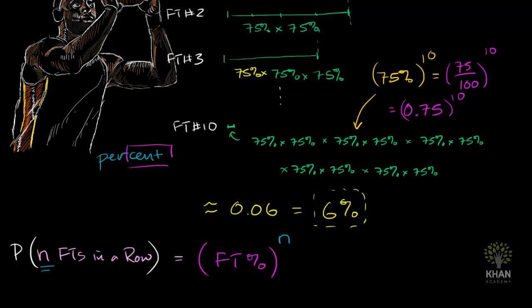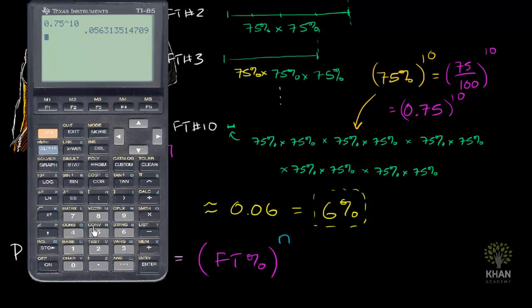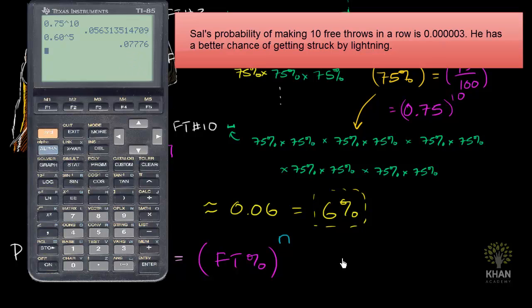So for example, you might want to play around with your own free throw percentage. If your free throw percentage, let's say it's 60%, which is the same thing as 0.6, and you want to see your probability of getting 5 in a row, you would take that to the 5th power. And you'd get what looks like, if you're rounding to the nearest hundredths, about 8%. So I encourage you to try this with different free throw percentages and different numbers of free throws that you're attempting to get in a row.